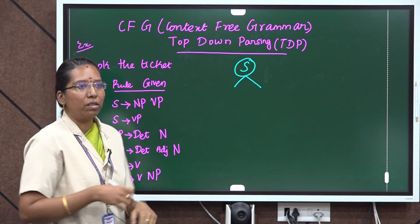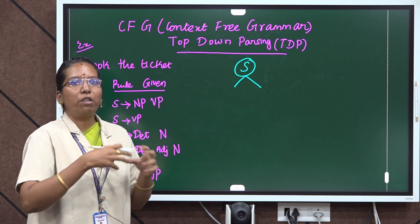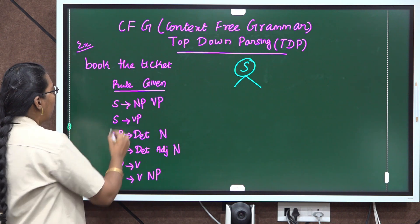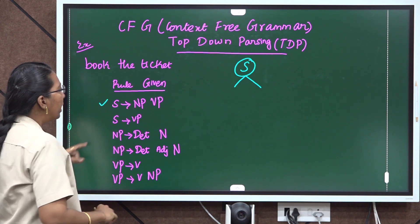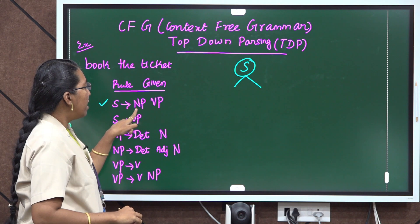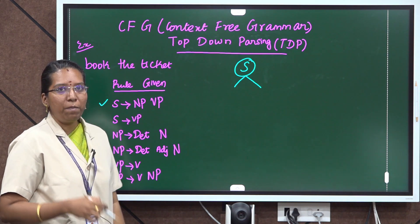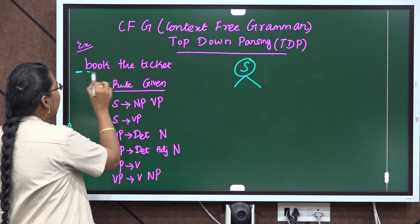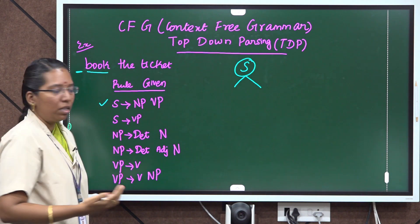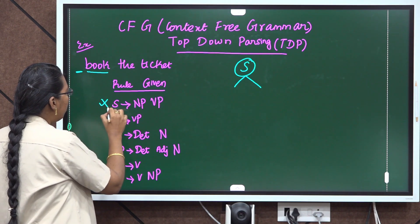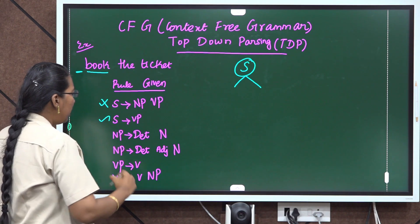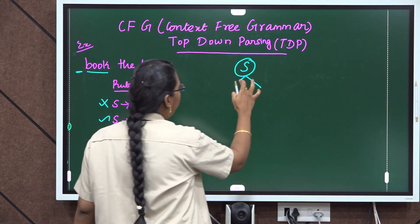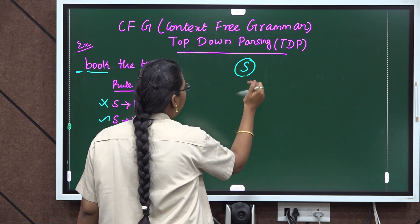'Book the ticket' — ticket means we are going to book it, so book is the verb here. The first rule we cannot apply. Why? That starting symbol is NP VP, and NP means we need a noun phrase, but here there is no noun phrase — it starts from a verb phrase. So I cannot choose the first rule; I choose the second one, that is starting symbol VP.